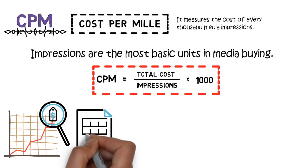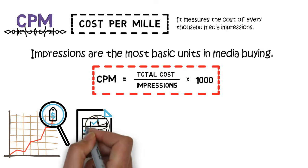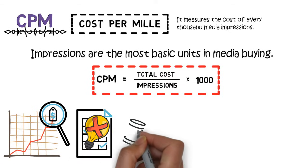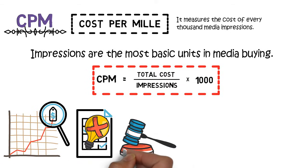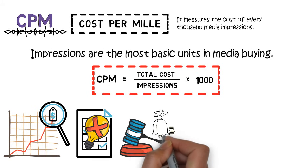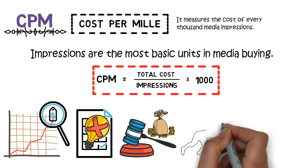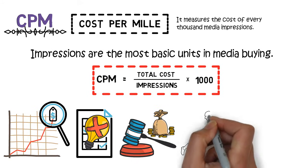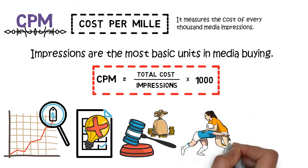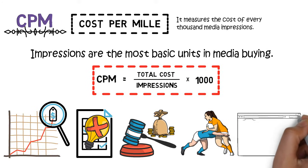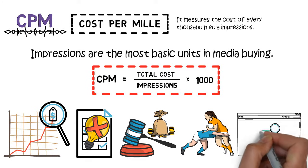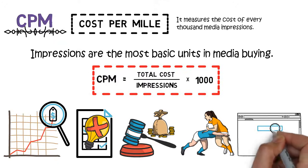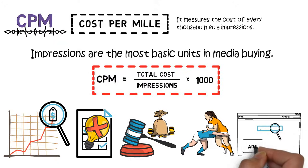CPM usually is not the main performance indicator of a campaign, but it can tell you quite a lot. For example, a higher CPM can mean that you are bidding too high or there are extensive competitions in the market. Oftentimes, we would increase our CPM for brand awareness campaigns to reach impressions with higher viewabilities.